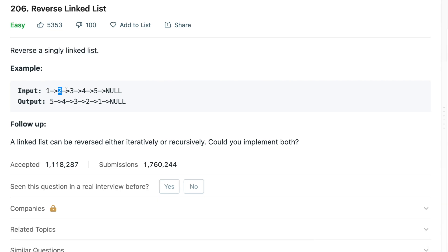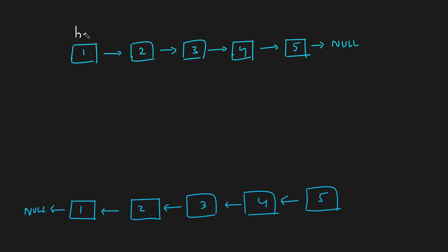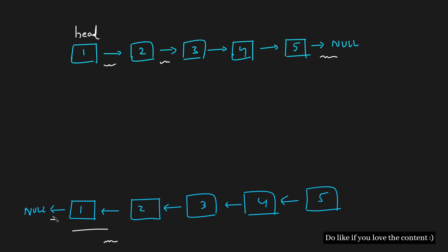For example, you're given a linked list as 1, 2, 3, 4, 5 where 5 points to null. You need to reverse it to get 5, 4, 3, 2, 1 pointing to null. Remember, whenever they say they will give you a linked list, it means they will only give you the head. So we have the head which is 1, and we need to reverse the entire linked list to produce this result.